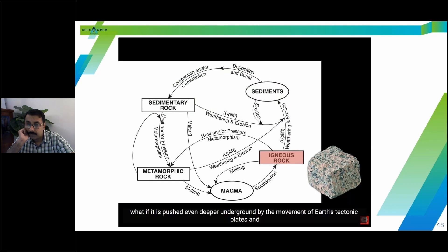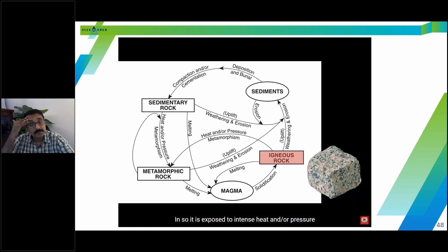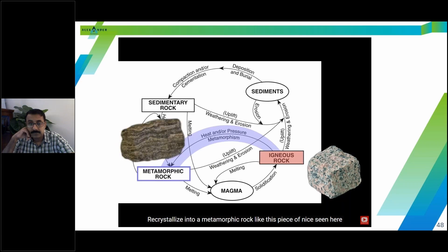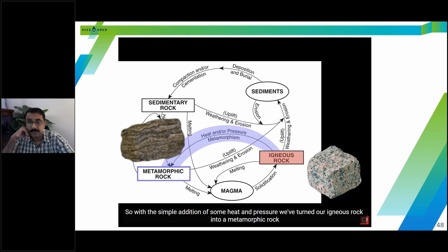What if it is pushed even deeper underground by the movement of Earth's tectonic plates? And in so doing, it is exposed to intense heat and or pressure, causing it to metamorphose or recrystallize into a metamorphic rock, like this piece of gneiss seen here. So with the simple addition of some heat and pressure, we've turned our igneous rock into a metamorphic rock.